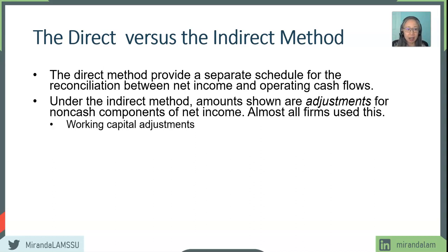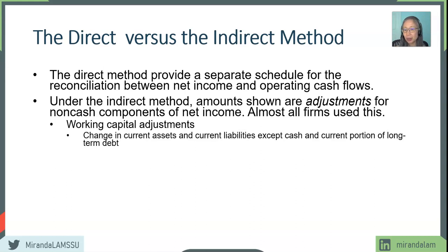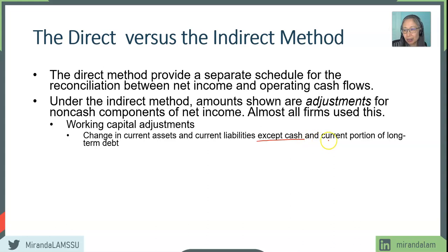What are those adjustments? They include working capital adjustments — meaning changes in current assets and current liabilities. We do not include cash in those changes, and current portion of long-term debt is part of investing activity, not operating. Cash itself is the end product: when we finish the statement of cash flow, we find out the change in cash. If we included cash in the adjustments, we would have a simultaneous equation problem.